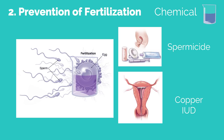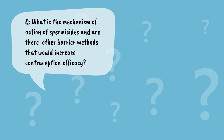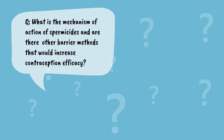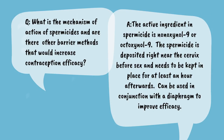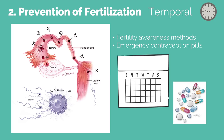Chemical barriers include spermicide and the copper IUD. The copper IUD causes a local inflammation that is toxic to sperm and egg and also interferes with sperm motility. Let's pause, think, and apply. The active ingredient in spermicide is nonoxynol-9 or octoxynol-9. The spermicide is deposited near the cervix before sex and must be kept in place for at least one hour afterwards; it can be used with a diaphragm to improve efficacy. Temporal barriers include fertility awareness methods and emergency contraception. Emergency contraception is purely a temporal barrier and will not interfere with an established pregnancy.